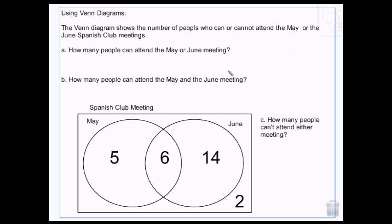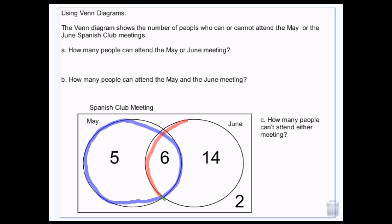We can use Venn diagrams to answer questions. The universe here is the Spanish club meeting. Everybody in the blue circle can attend in May, and everybody in the red circle can attend in June. To answer how many people can attend the May or June meeting — remember to live in the center you have to be an AND — if it's OR you can be any one of these, so I'm going to do 5 plus 6 plus 14.